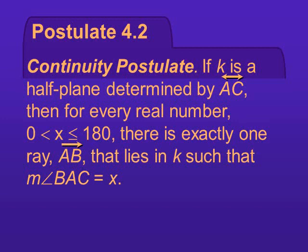And it is the converse of the protractor postulate. So the protractor postulate says that every angle has a measure. The continuity postulate says every measure has an angle. Hopefully that helps. Just like the completeness postulate and the ruler postulate were converses of one another. Same thing here.